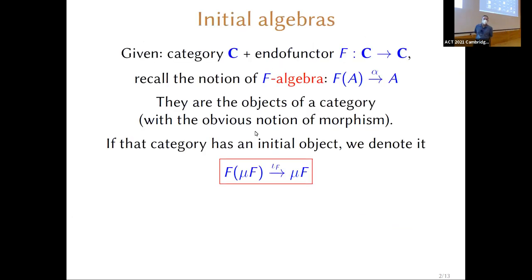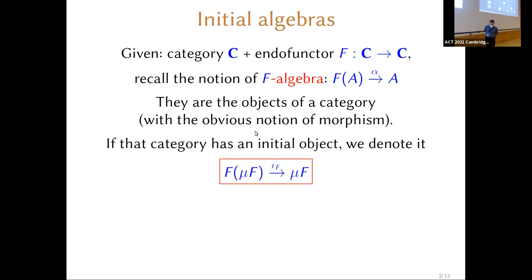The category theory is something really simple. I'm going to assume that you know what an initial algebra for a functor is. An F-algebra for a functor F is an object together with a morphism from F(A) back to A. There's an obvious notion of morphism of F-algebras, giving us a category. The initial object in that category is the initial F-algebra. I'll use μF for the underlying object and ι_F for the algebra structure morphism.